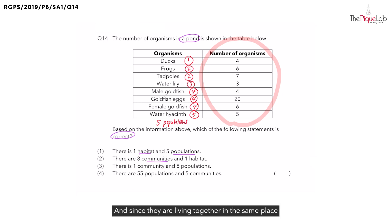And since they are living together in the same place, what do we call the pond? Yes, we give it a special name. The pond is known as a habitat. How many habitats do we have in this question? Since we only have one pond, we only have one habitat.